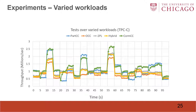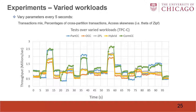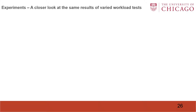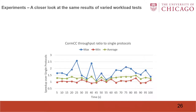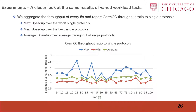Next, we perform a test over a varied workload. We vary parameters every 5 seconds and report the results of 100 seconds. We find that COMCC can perform best in most cases. We aggregate the throughput of every 5 seconds and report COMCC throughput ratio to single protocols, which includes the speedup over the worst single protocol, over the best single protocol, and over the average throughput of single protocols. We find that COMCC has a significant improvement over single protocols and can perform better than the best single protocol in most cases.